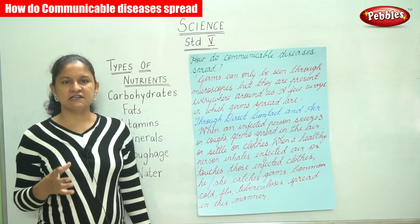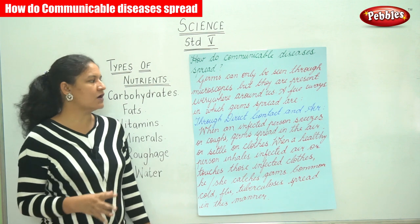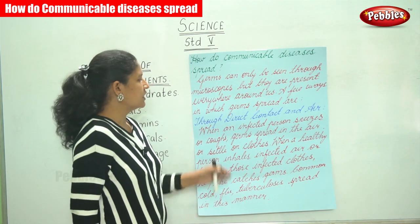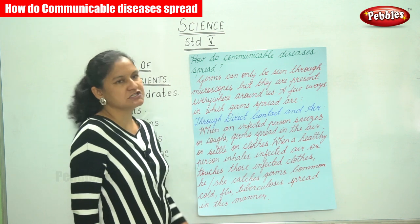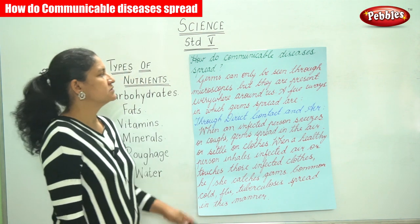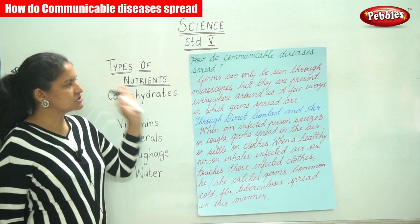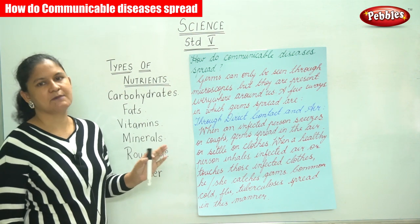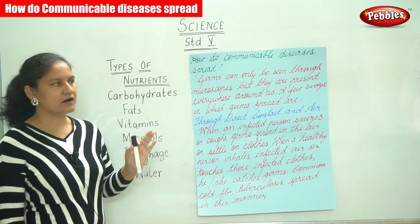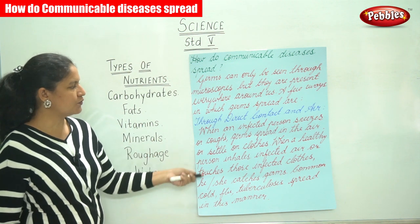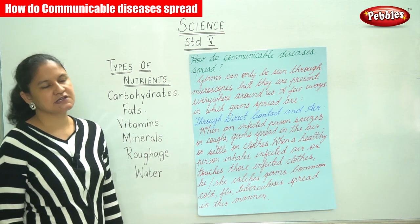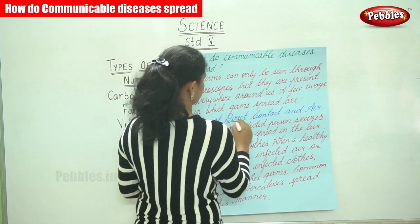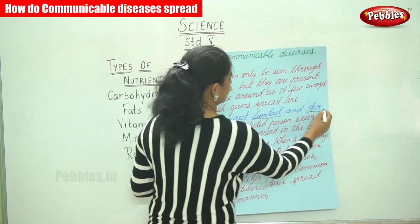These germs are found and present everywhere around us. There are a few ways in which germs spread. The first is through direct contact and air.